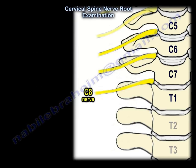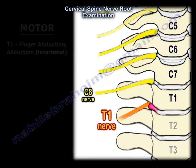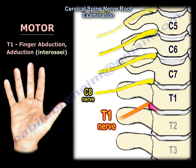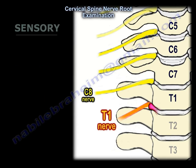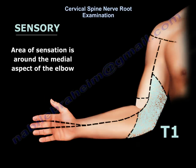A disc herniation between T1 and T2 will affect the T1 nerve root. The motor function involves abduction and adduction of the fingers. The sensory area of T1 is around the medial aspect of the elbow.